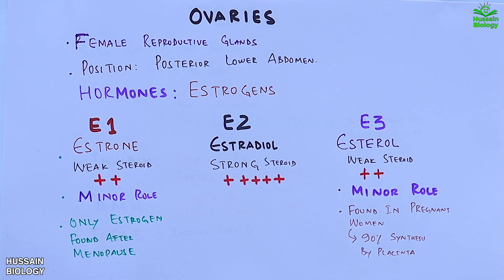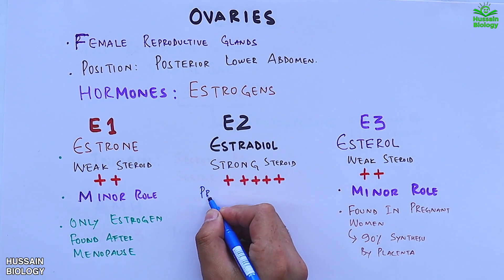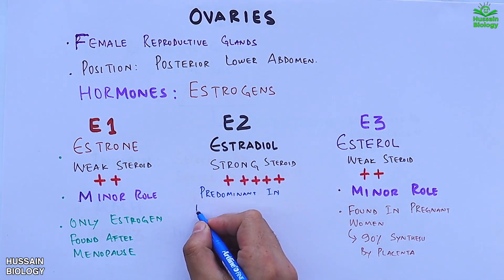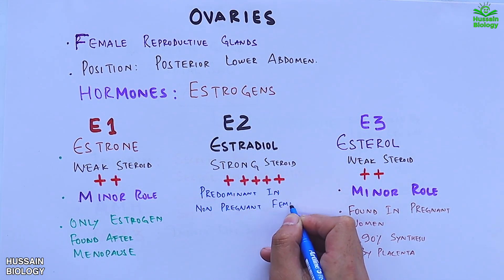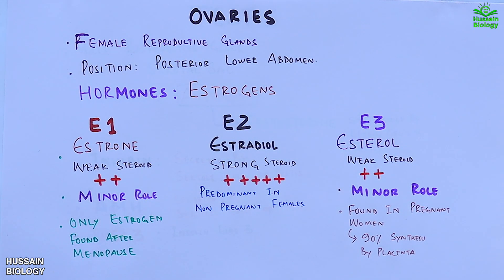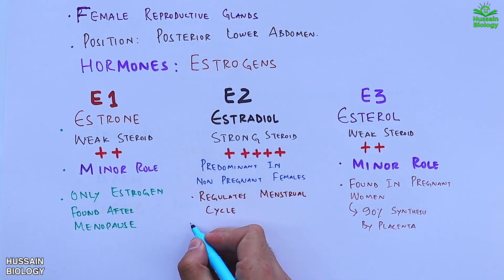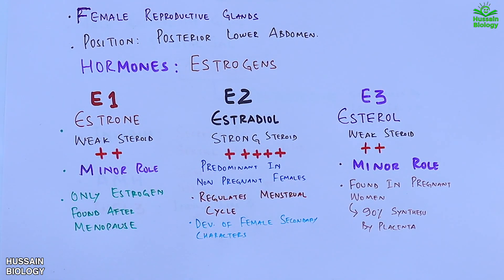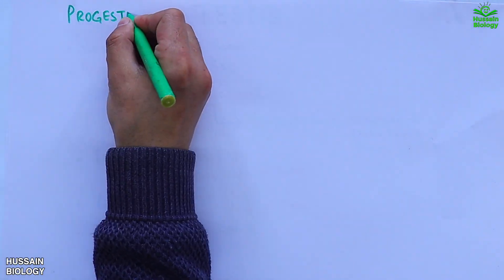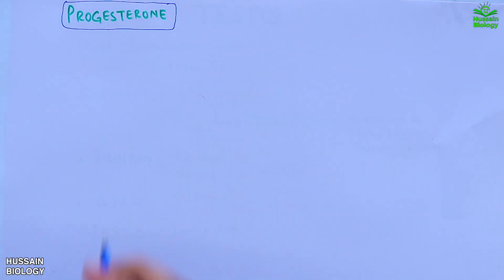The E3 form, estriol, is only found in pregnant women, and about 90% is synthesized by the placenta during pregnancy. E2, estradiol, is predominant in non-pregnant females; it regulates the menstrual cycle and aids in development of female secondary sexual characters.